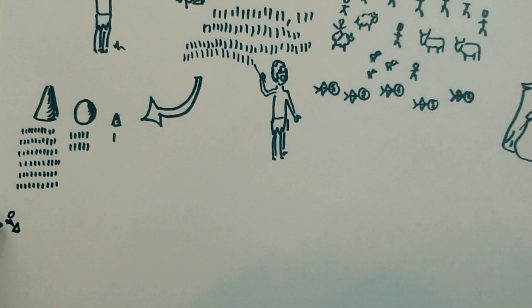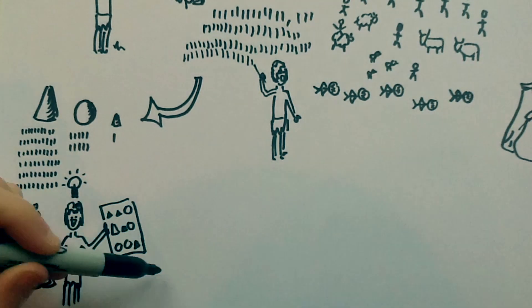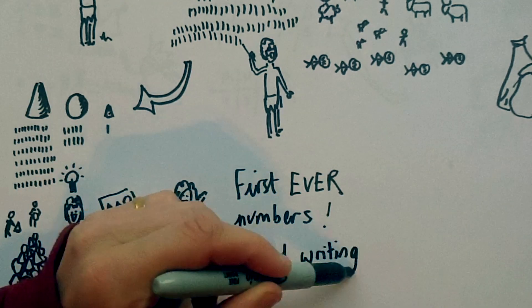Then they realised they didn't even need the things. They could just draw the things on clay, and these symbols and pictures were the first numbers. In fact, they were the first writing.